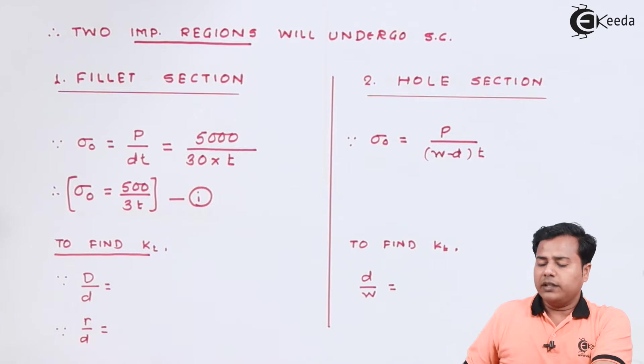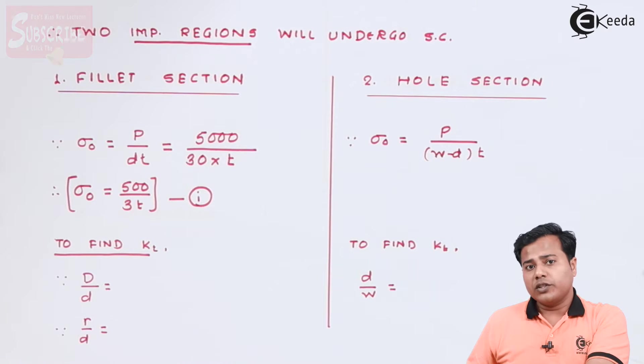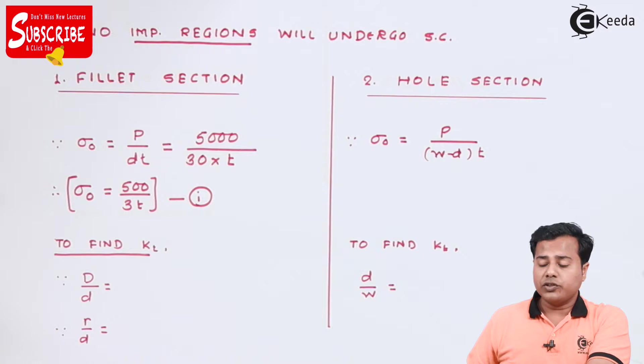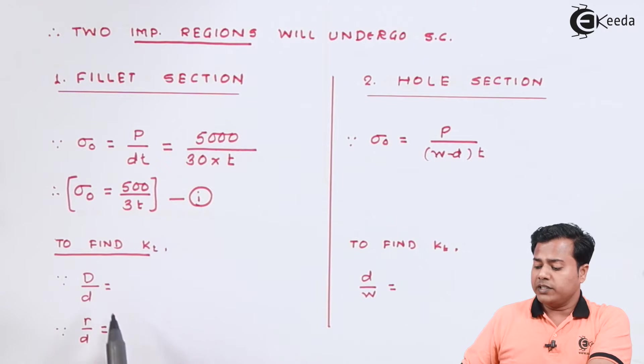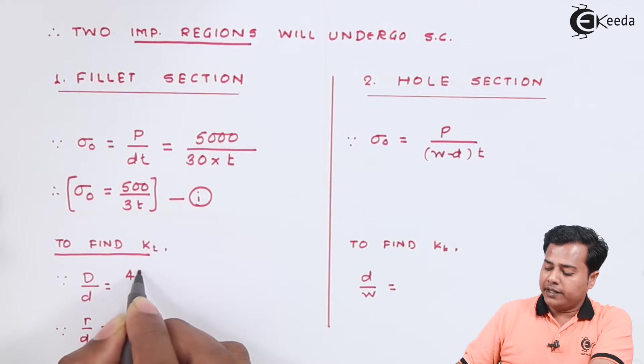Now you can always refer to the chart used in the design data book for finding out stress concentration factor for a plate which is loaded in tension. For such case the ratio D by d is very important which in our case is 45 by 30.